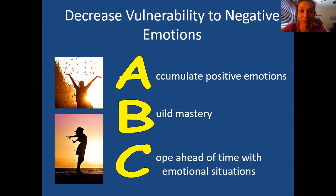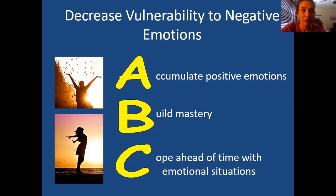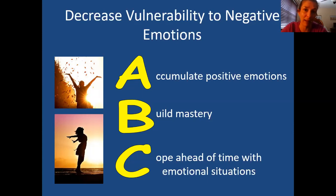Then the C is a little different from the A and B, because this is coping ahead of time with emotional situations — the cope ahead skill. This is like looking ahead at your week, thinking about what might be coming up for you, and then trying to plan in advance how you might cope, so you're not caught by surprise when the event actually happens. Because sometimes we can anticipate what might be a stressful interaction or some kind of event that'll be hard for us, and we can plan ahead how we might be able to deal with it when we get there.